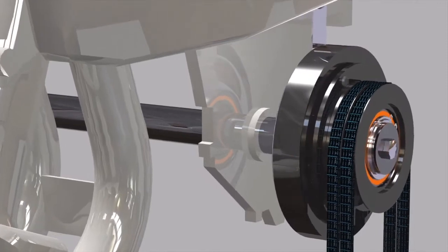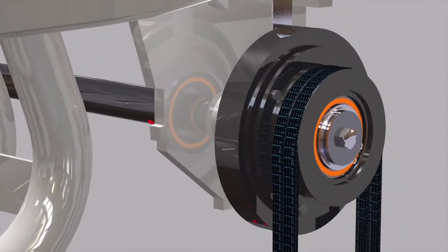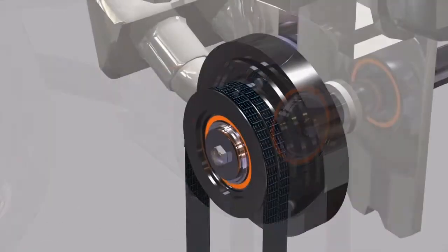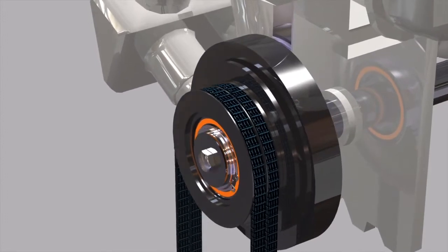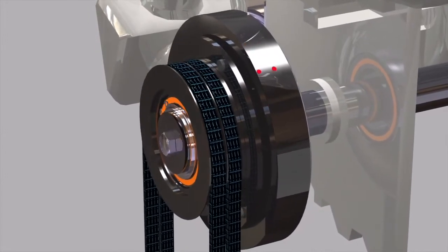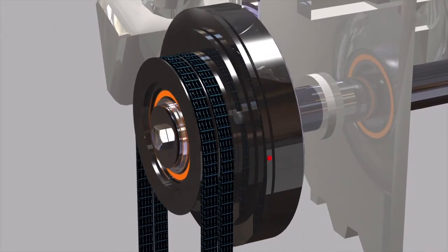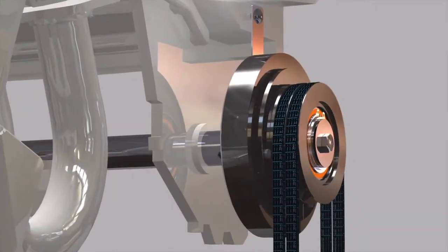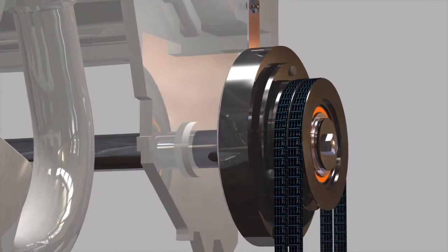Electromagnetic clutches can be found in many applications that are transferring rotary motion from a gas or diesel engine to a pump, compressor, or other device requiring on-off rotary motion, engaging when needed and disengaging when not, increasing overall component life and reducing energy.